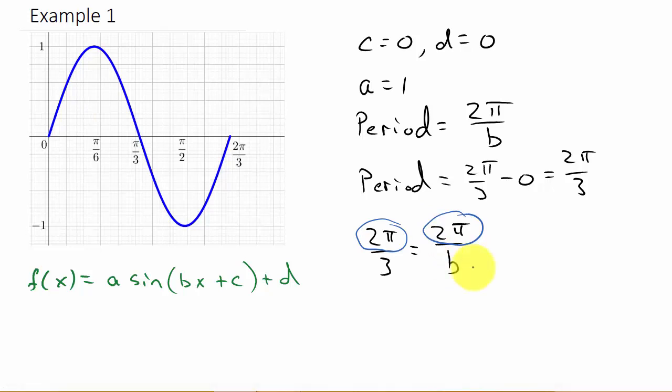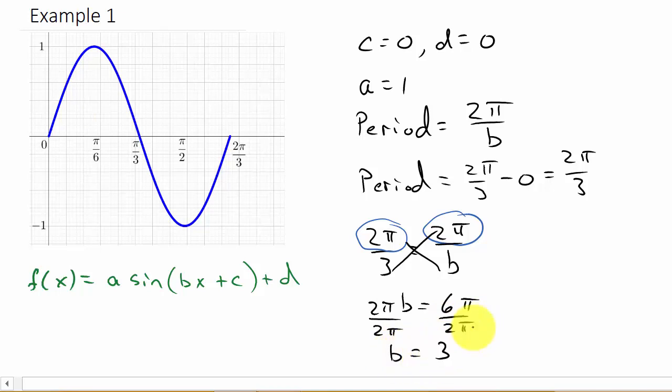Or if you wanted to solve it, you could cross multiply, and that would give you two pi b equals six pi. Divide both sides by two pi, so we get b equals three.